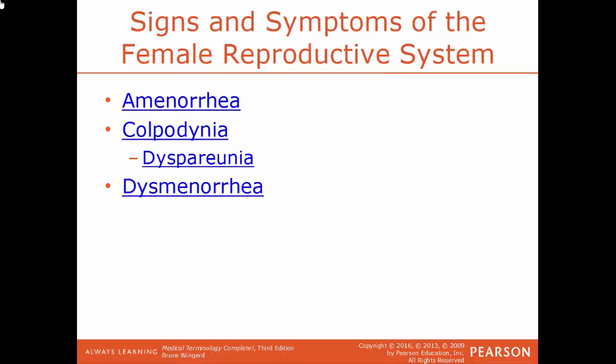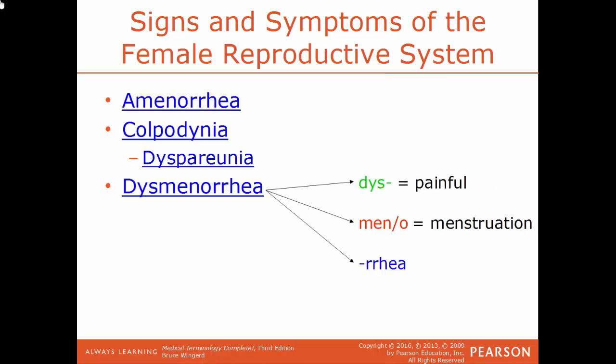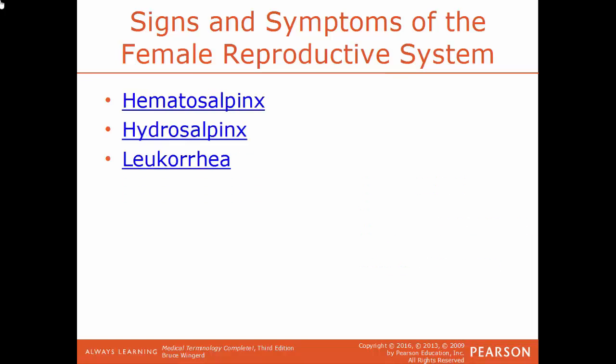Signs and symptoms of the female reproductive system: amenorrhea is an abnormal absence of menstruation — one or more missed periods. Colpodynia is pain in the vagina. Dyspareunia is having difficult or painful sexual intercourse. Dysmenorrhea — breaking down the term: dys means painful, menno means menstruation, urea means discharge — so dysmenorrhea is having a painful menstruation.